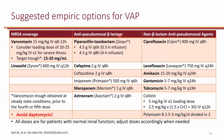For the two agents used for Pseudomonas, one should be a beta-lactam and the second should be a non-beta-lactam. Beta-lactam options include piperacillin-tazobactam, cefepime, ceftazidime, imipenem, meropenem, or aztreonam. Non-beta-lactam options include ciprofloxacin, levofloxacin, amikacin, gentamicin, or tobramycin. Polymyxins — such as colistin and polymyxin B — are also available but are usually reserved as last-line agents.